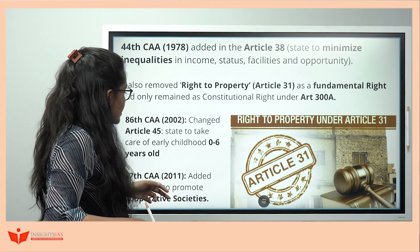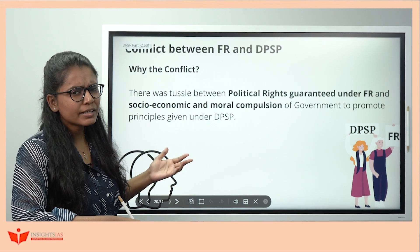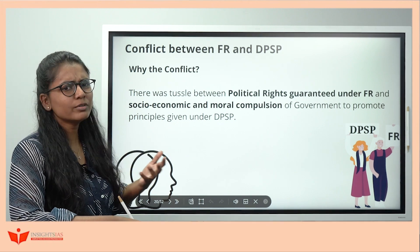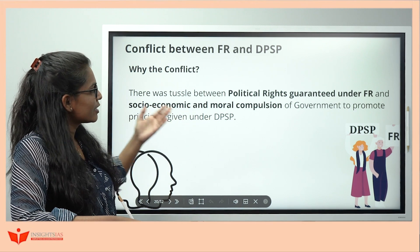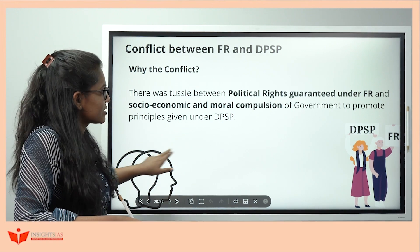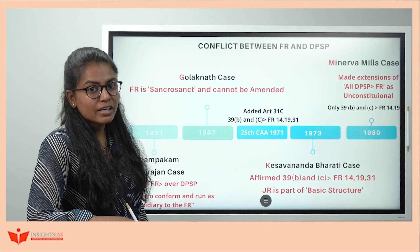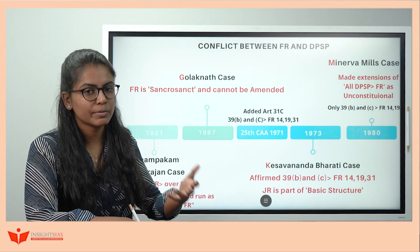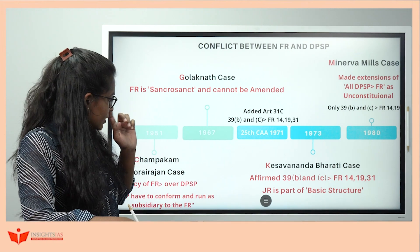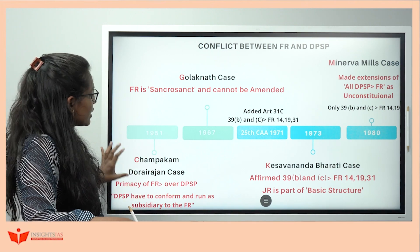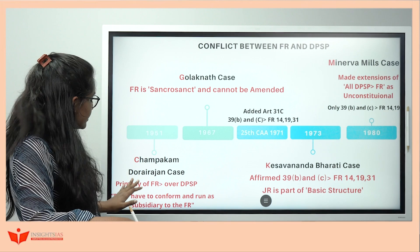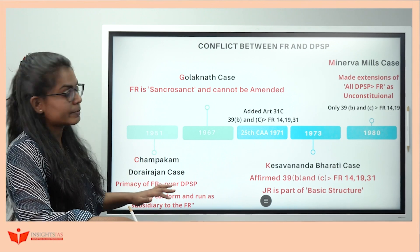Now let's see the conflict between Fundamental Rights and DPSP. This conflict arose because Fundamental Rights had political rights while DPSPs had socio-economic rights. After independence, the government wanted to distribute land held by zamindars. Zamindars went to court, giving us the Champakam Durai Rajan case, where it was held that Fundamental Rights have primacy over DPSP — DPSPs must conform as subsidiary to Fundamental Rights.